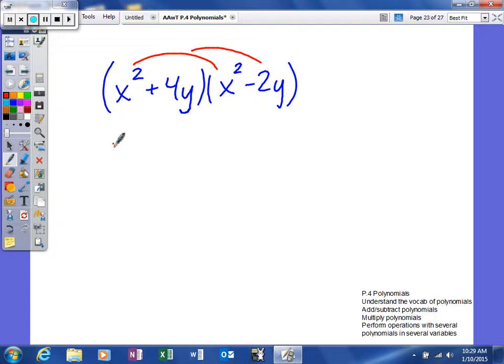So I'm going to take this and multiply it times both. It gives me x to the fourth, and then minus 2x squared y.